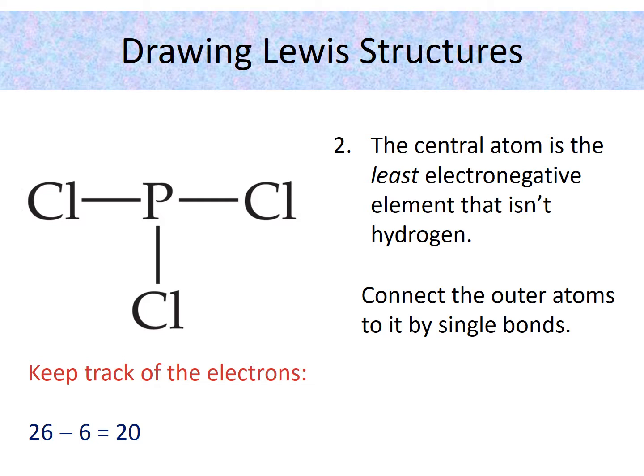We would subtract six bonding electrons from 26. That gives us 20 left to use. Now note, we subtracted six bonding electrons. We did not subtract three bonds because we're keeping track of the individual electrons, and every bond has two electrons.